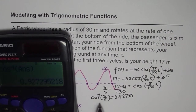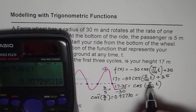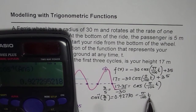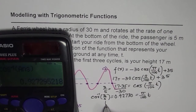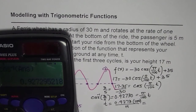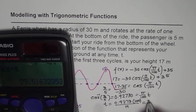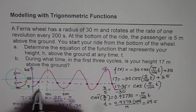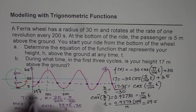So cos⁻¹(3/5) ≈ 0.9273, and this equals π/100 · t. From here we can find t: t = 0.9273 × 100 / π. Multiplying by 100 and dividing by π gives us approximately 29.5 seconds. So the first point is at t = 29.5 seconds.